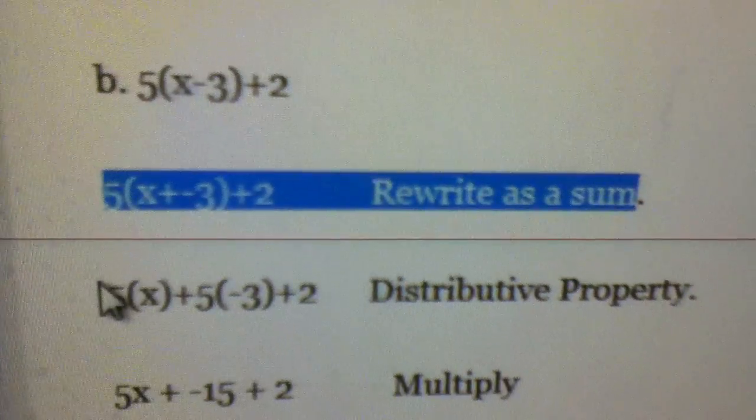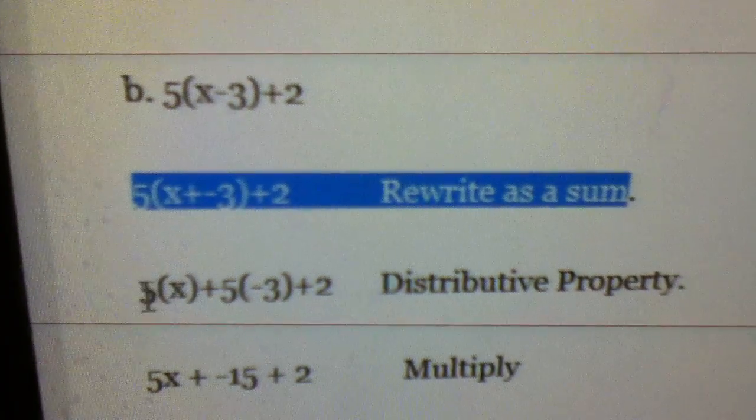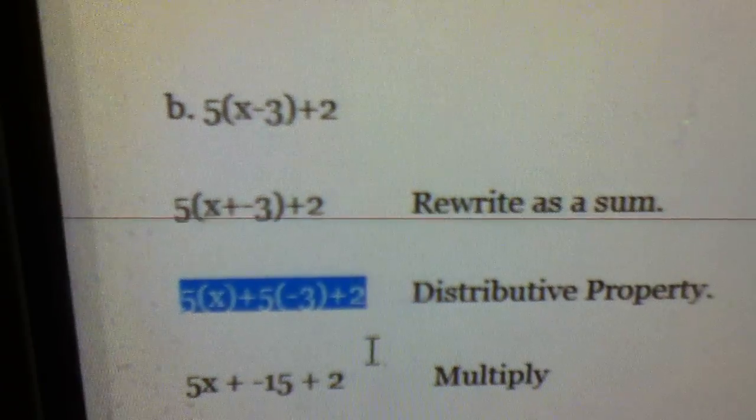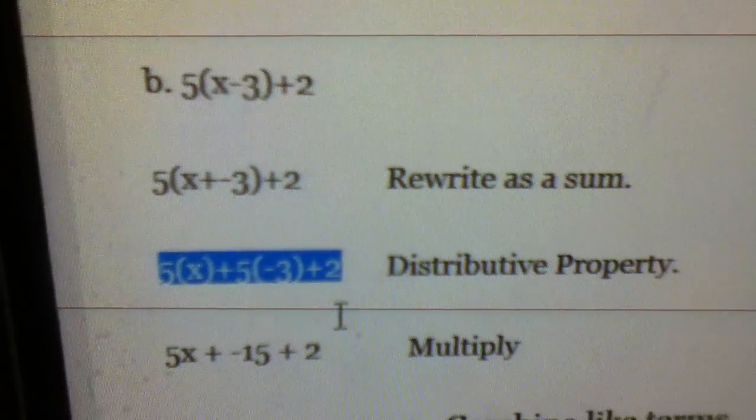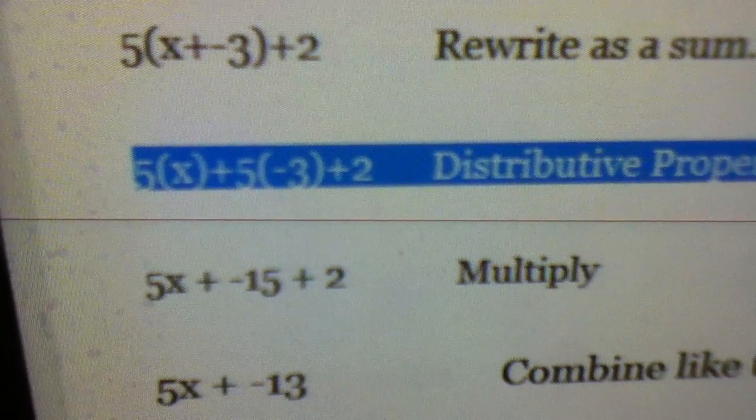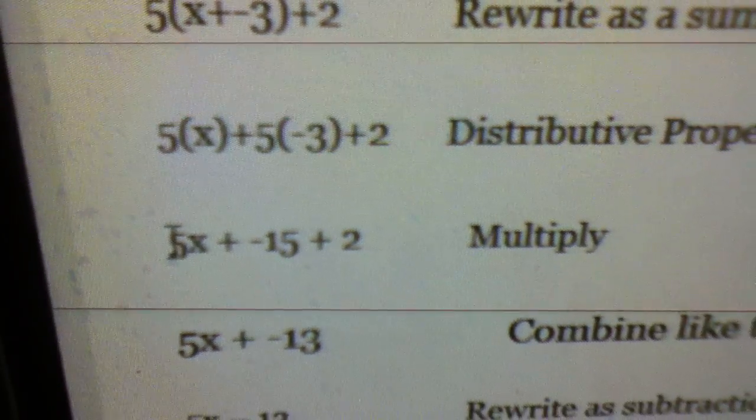Then we're going to multiply with the distributive property, so it'd be 5 times x. That's the first step, and then 5 times negative 3. Then you multiply, which is 5x and negative 15.